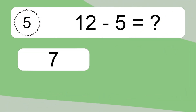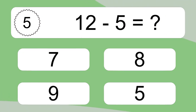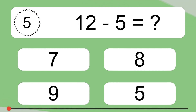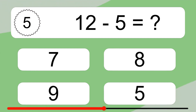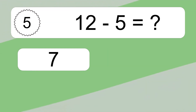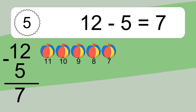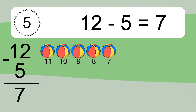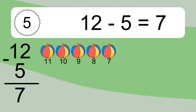12 minus 5 equals what? 12 minus 5 equals 7. Let's count it. 11, 10, 9, 8, 7.